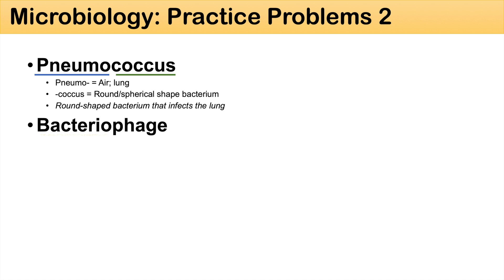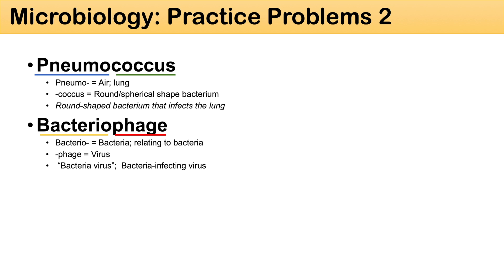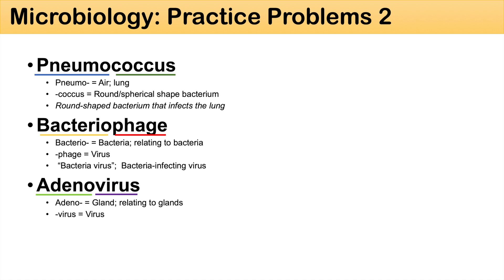A bacteriophage — bacterio means bacteria or something relating to bacteria, and phage means a virus. So bacteriophage means a bacteria-infecting virus. And lastly, adenovirus — adeno means gland or relating to glands, and virus means virus. So adenovirus means a gland virus — a virus that infects or is related to infection of glands.